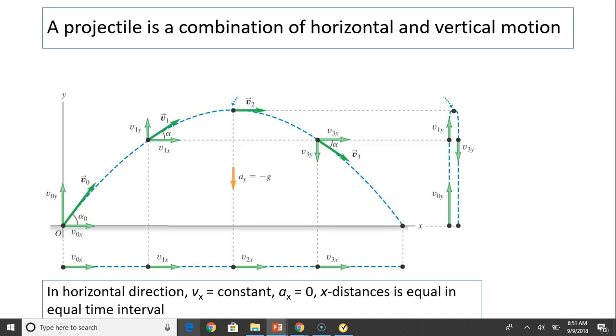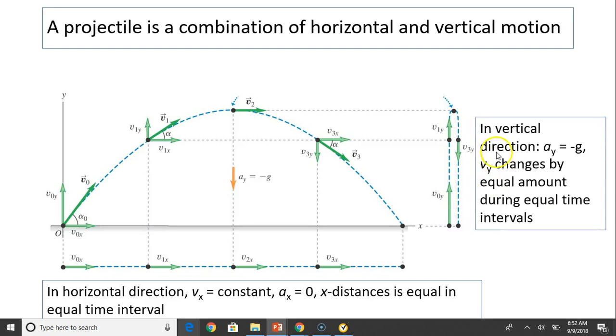In the vertical direction, a vertical object is like a free fall object. It goes up then comes down. In the vertical direction, acceleration is constant. It's negative g, negative because it's downward. Velocity changes by equal amounts during equal time intervals. For each second, the velocity changes by negative 9.8 meters per second.